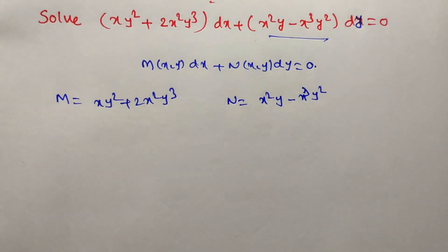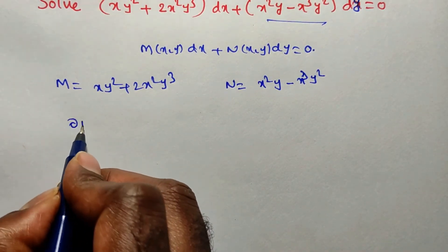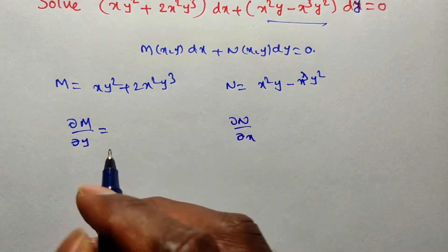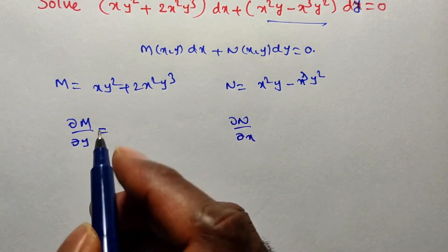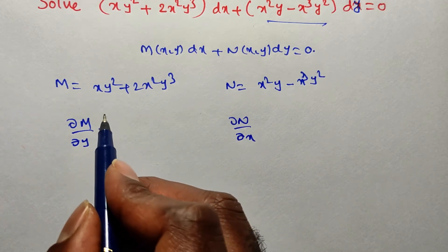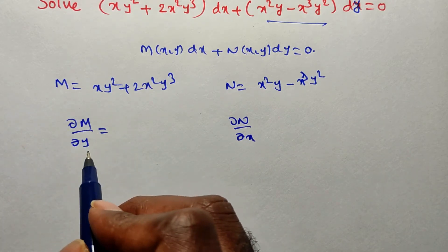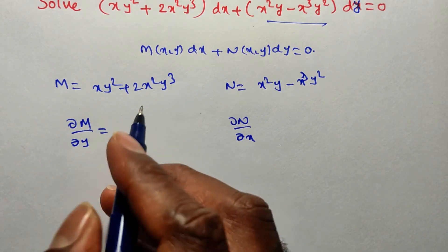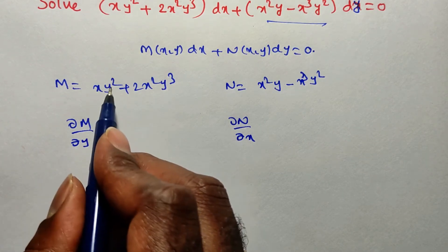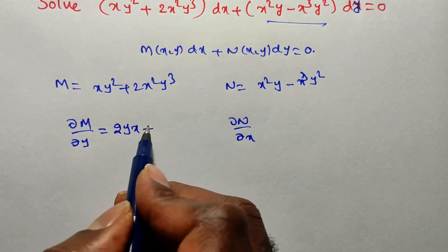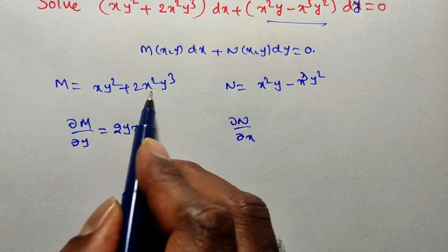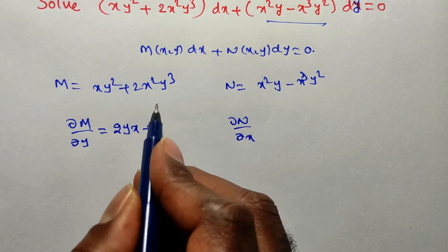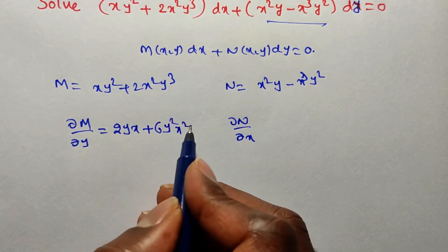Now we have to verify whether it is exact or non-exact. For that we find ∂M/∂y and ∂N/∂x. Finding ∂M/∂y means differentiating M partially with respect to y, treating all other variables as constants. x is constant, derivative of y² is 2y, so we get 2xy. Then 2x² is constant, derivative of y³ is 3y², giving 6x²y².